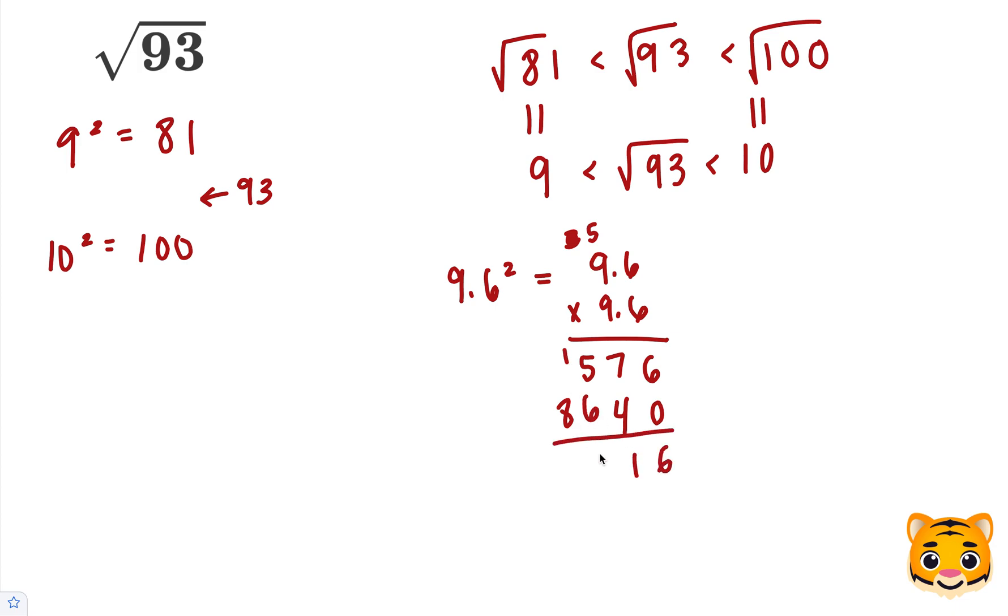When we add these values together, we end up getting 92.16, which is very close to 93. We can approximate it to 93 then, and say that 9.6 squared is approximately 93.